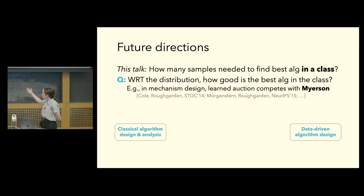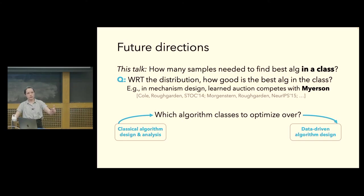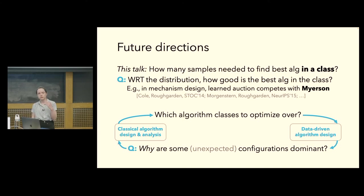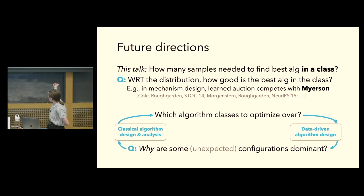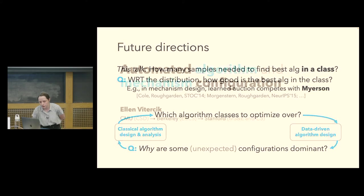Another direction is to close the loop between classical algorithm design and data-driven algorithm design. In the thesis, classical algorithm design inspired data-driven design by suggesting which classes of algorithms to optimize over. But data-driven algorithm design can also provide guidance for classical algorithm design — sometimes these data-driven approaches find configurations that work really well but which no one has studied before. Are there ways these data-driven approaches can help us better understand computational problems from a classical, even worst-case analysis, perspective? Thank you.